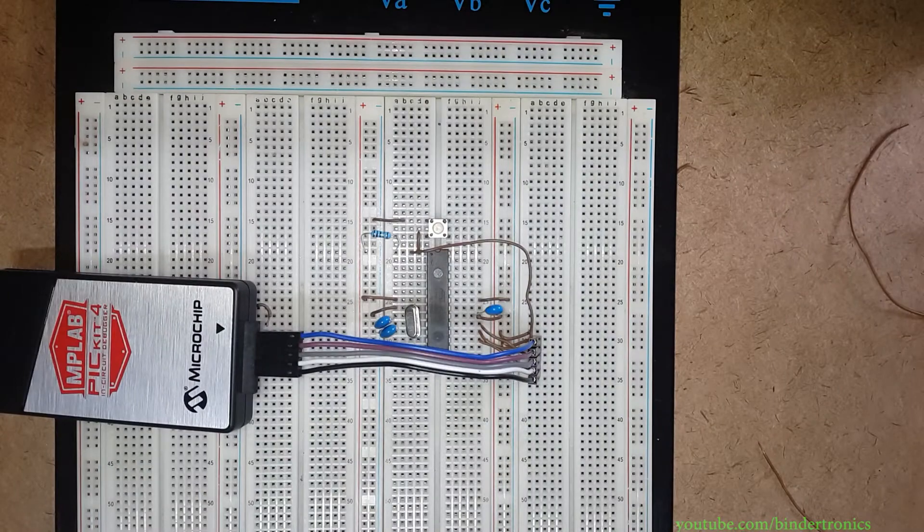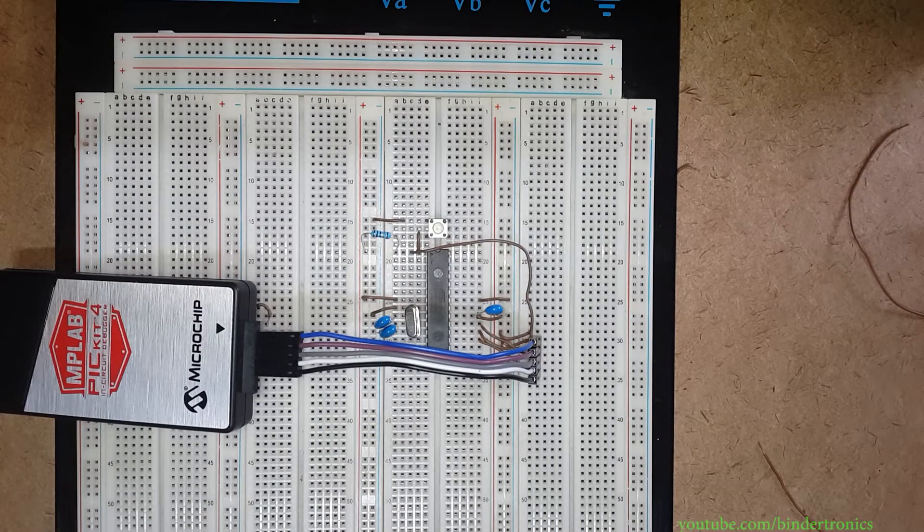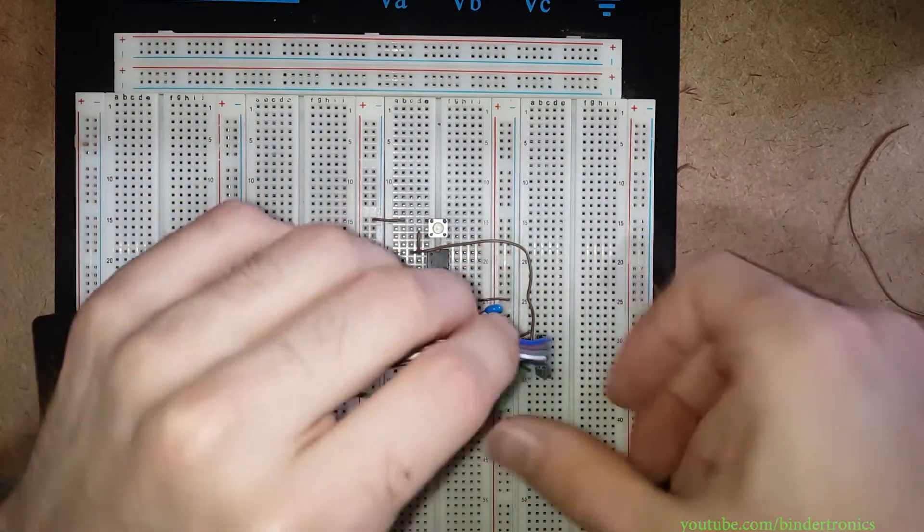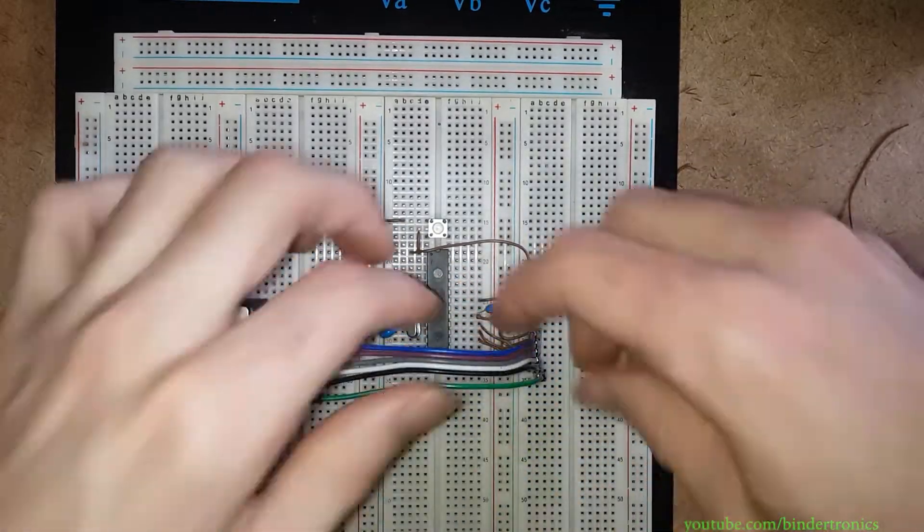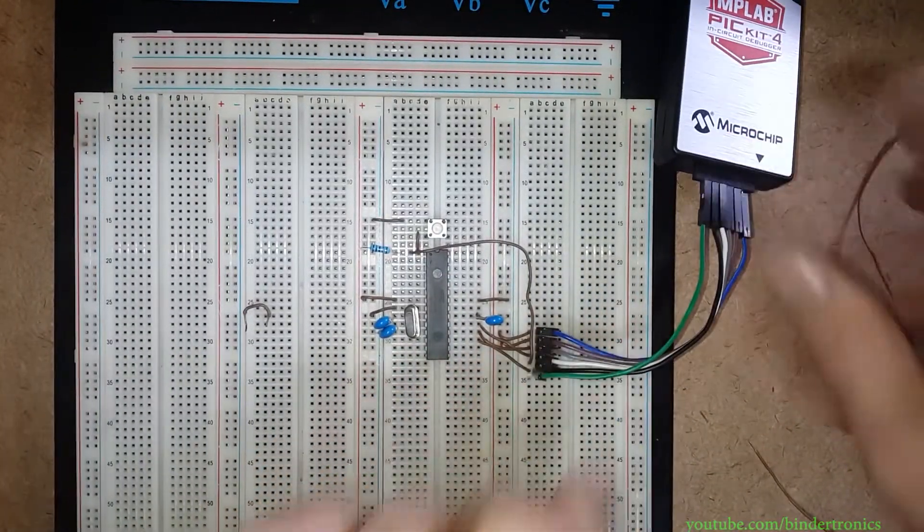Sorry if you can't see this. Yeah I need to learn how to count apparently. We have plus one wire. And then we have a programming header now in.